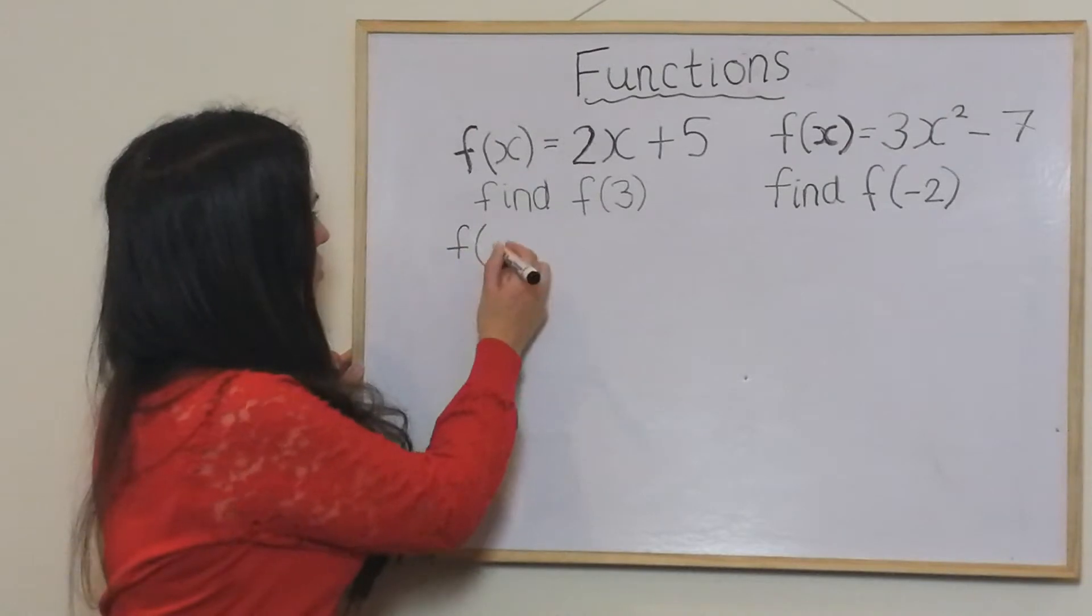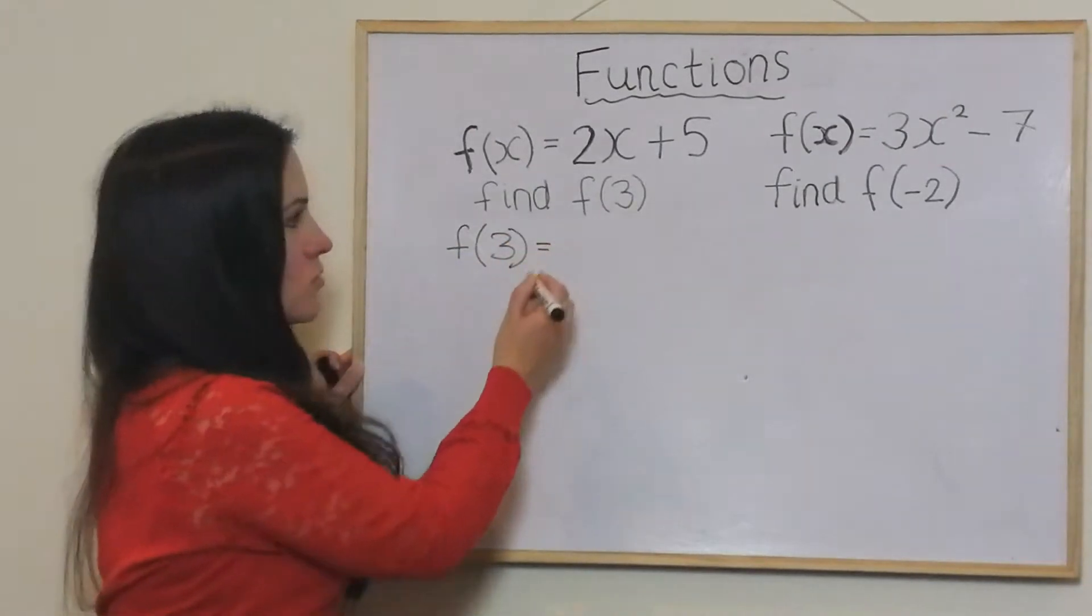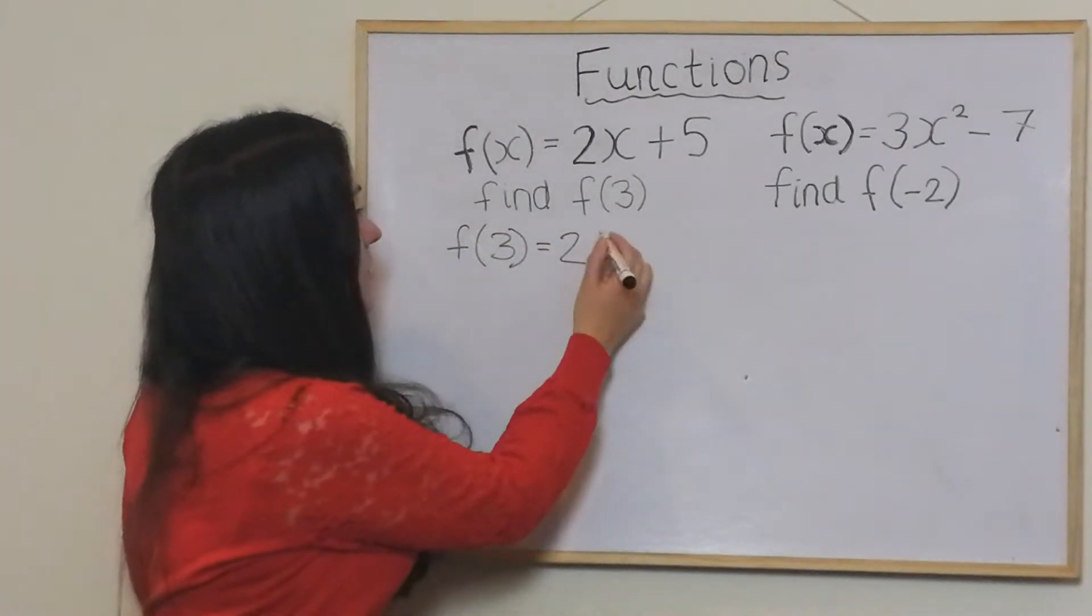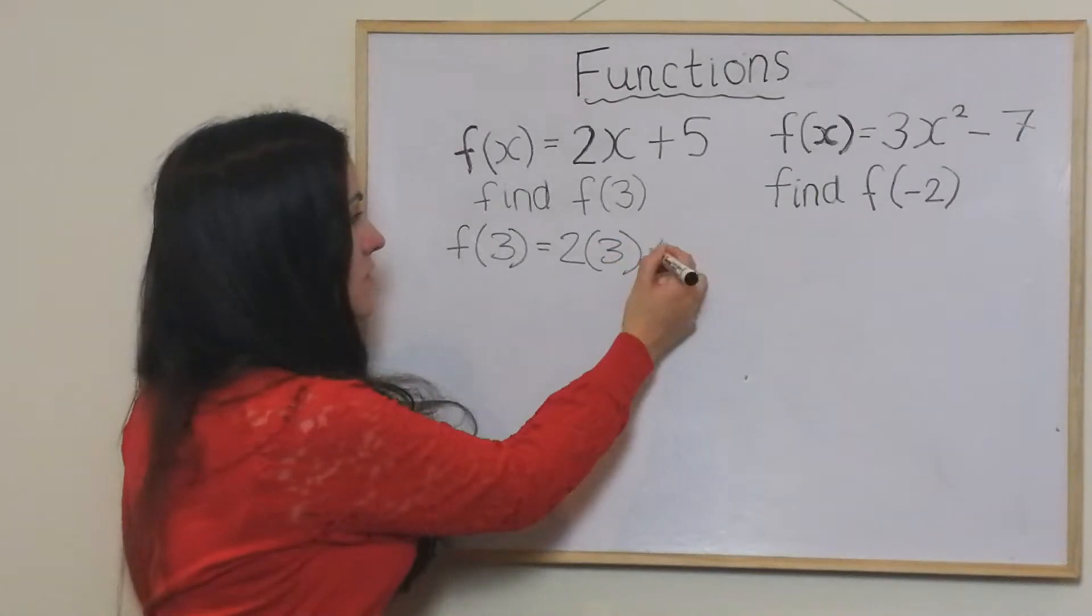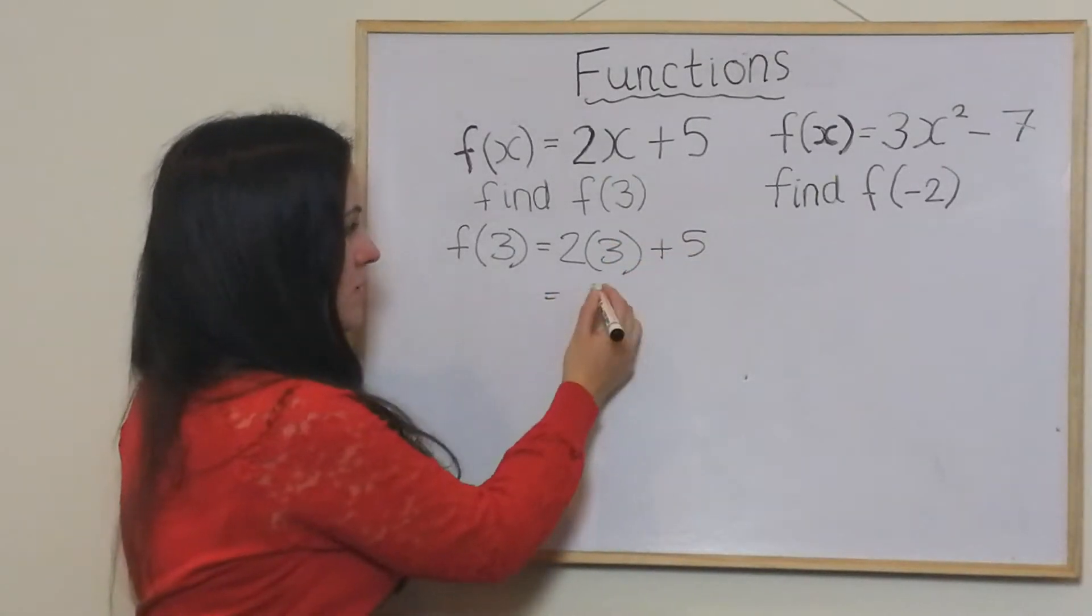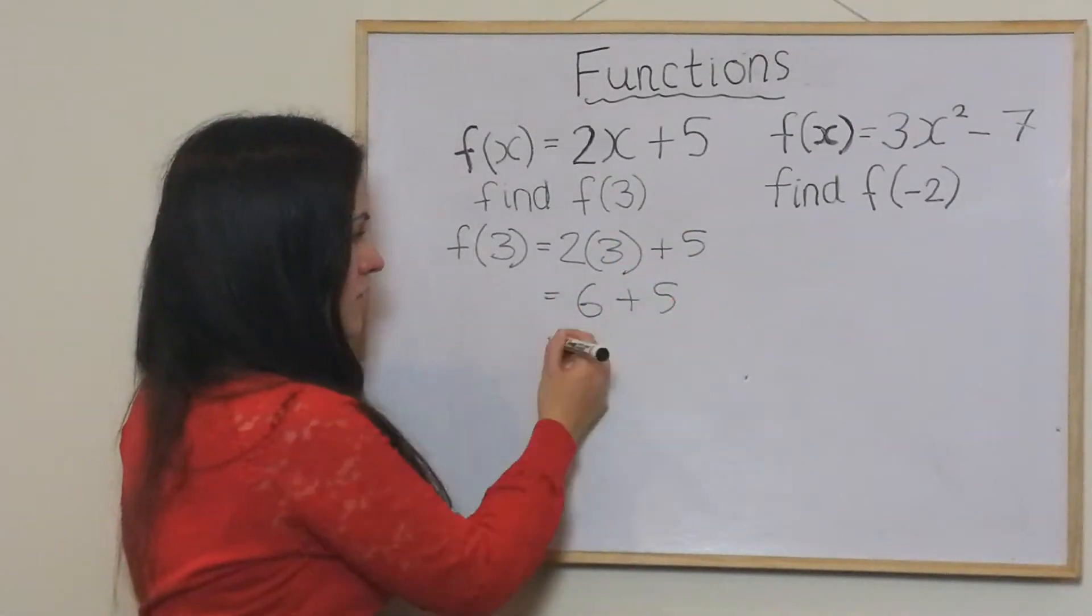So it becomes f of 3 equals 2 bracket 3 plus 5. That becomes 6 plus 5, which is 11.